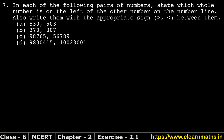Let's do question number 7 of Exercise 2.1 on whole numbers. Question 7 says: in each of the following pairs of numbers, state which whole number is on the left of the other number on the number line. Also write them with the appropriate sign — greater than or less than — between them.